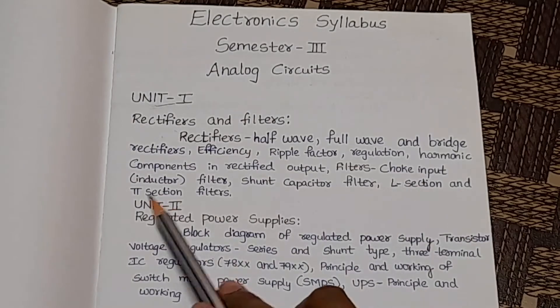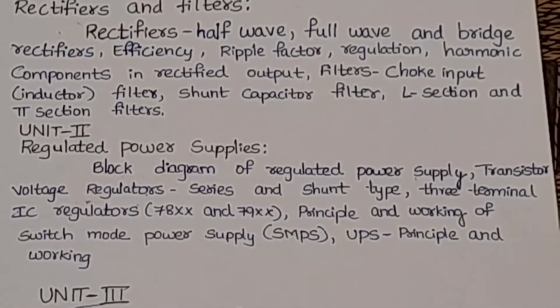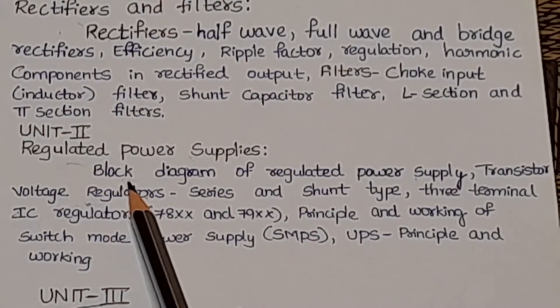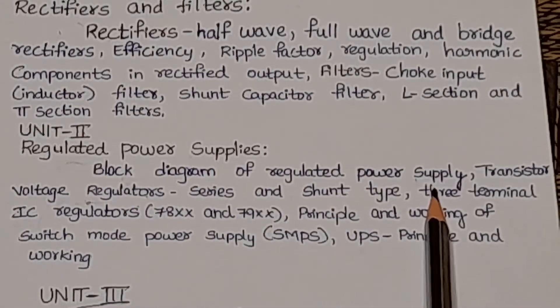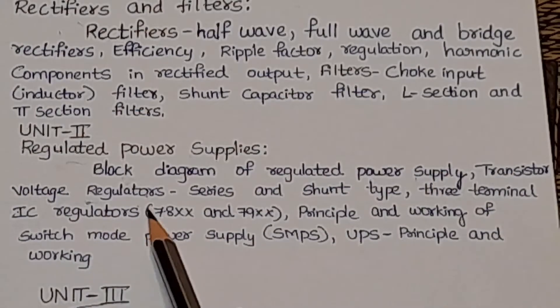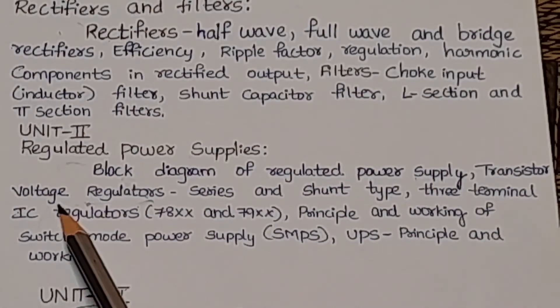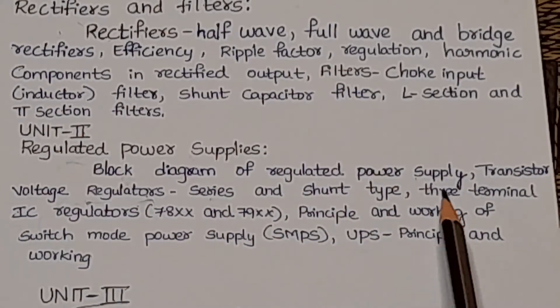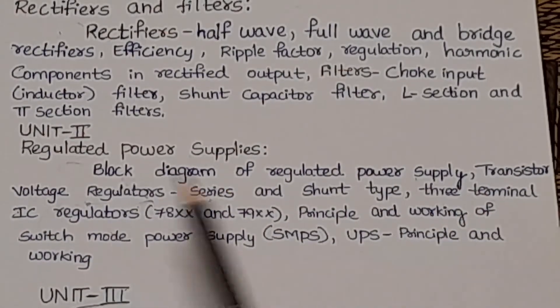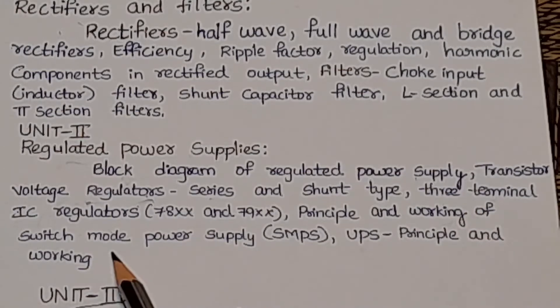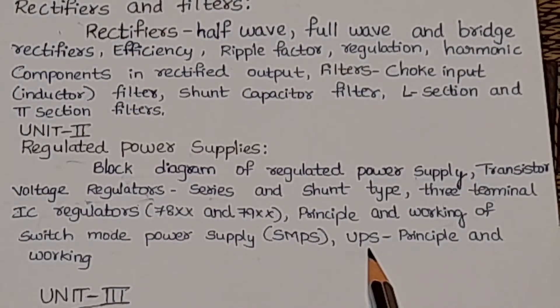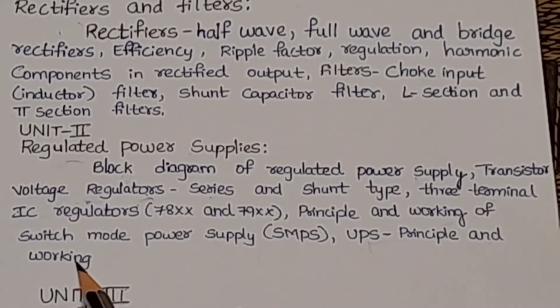In Unit 2, Regulated Power Supplies, we will discuss the block diagram of regulated power supply and transistor voltage regulators. In transistor voltage regulators, there are two types: series and shunt type, three-terminal IC regulators, principle and working of switch-mode power supply, and UPS—uninterruptible power supply. In this, we will discuss the principle and working.